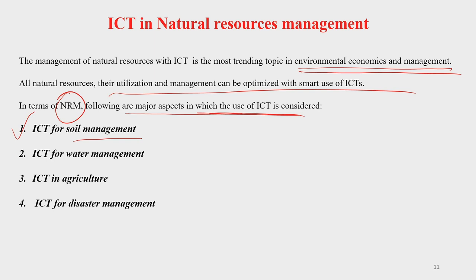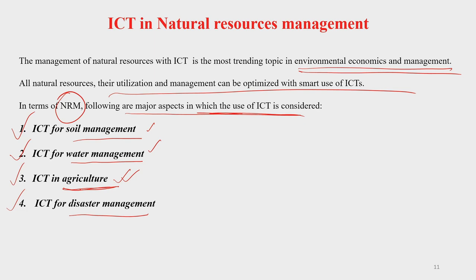All natural resources and their utilization and management can be optimized with the help of ICT. The following major aspects of NRM are where ICT plays a very important role: ICT for soil management, for water management, for agriculture, and for disaster management. Soil and water are the two most critical natural resources upon which civilization depends. In our country, a significant portion of the population still depends on agriculture for livelihood, and with a large country comes all kinds of disasters, where ICT again plays an important role.